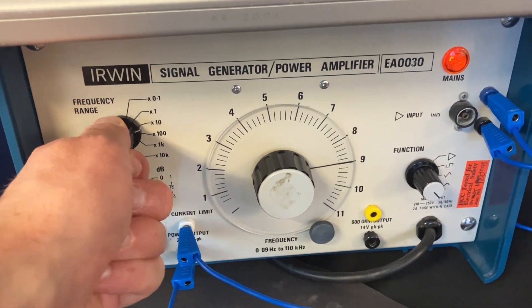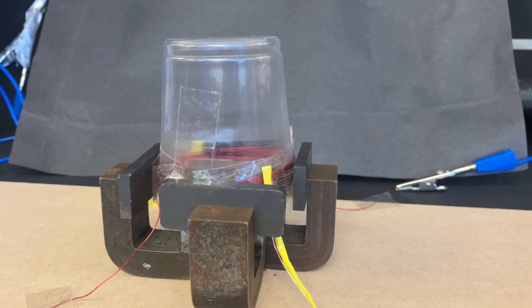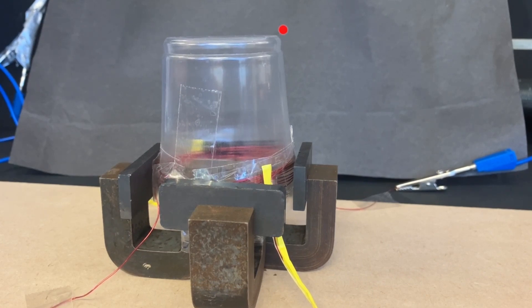I'm going to start off by using the signal generator at very low frequency and you can see that the cup vibrates up and down very slowly. This won't produce a sound.